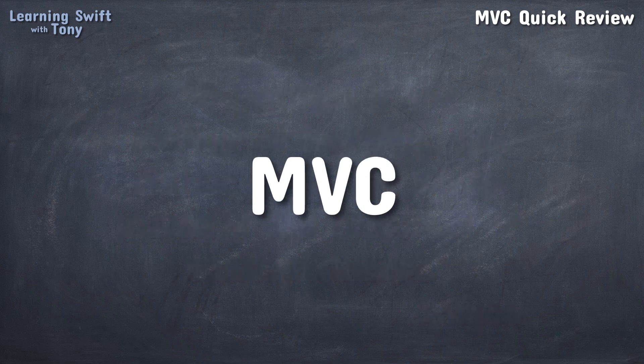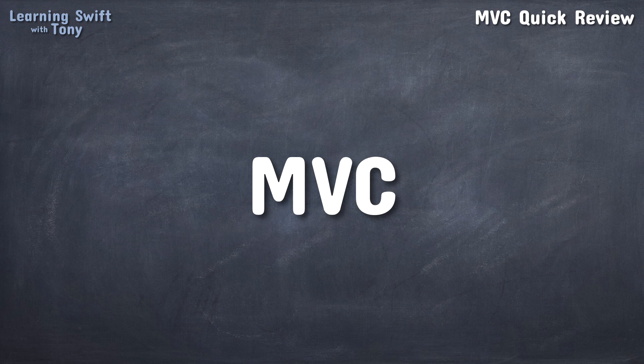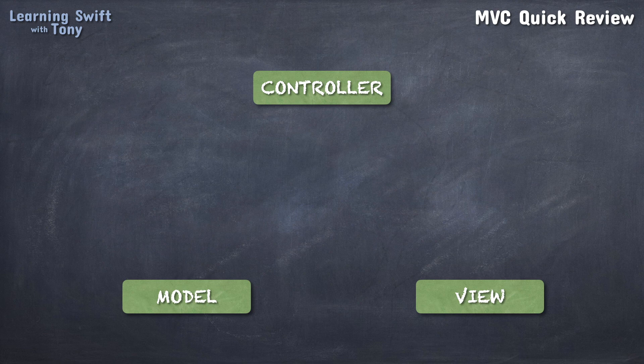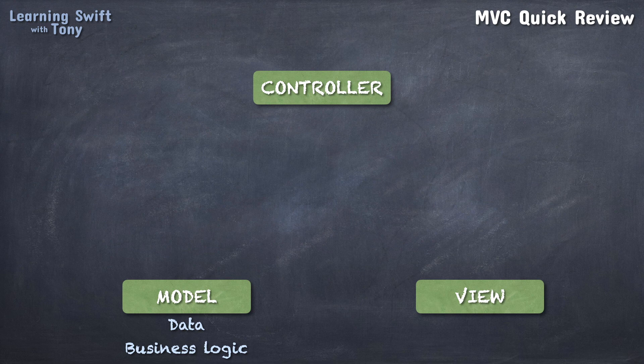So MVC is a software design pattern that divides the code of a project into three different groups: the model, the view, and the controller. The model encapsulates both the data and the business logic, which defines the rules of the app. The model is the what of the app, what the app is all about.